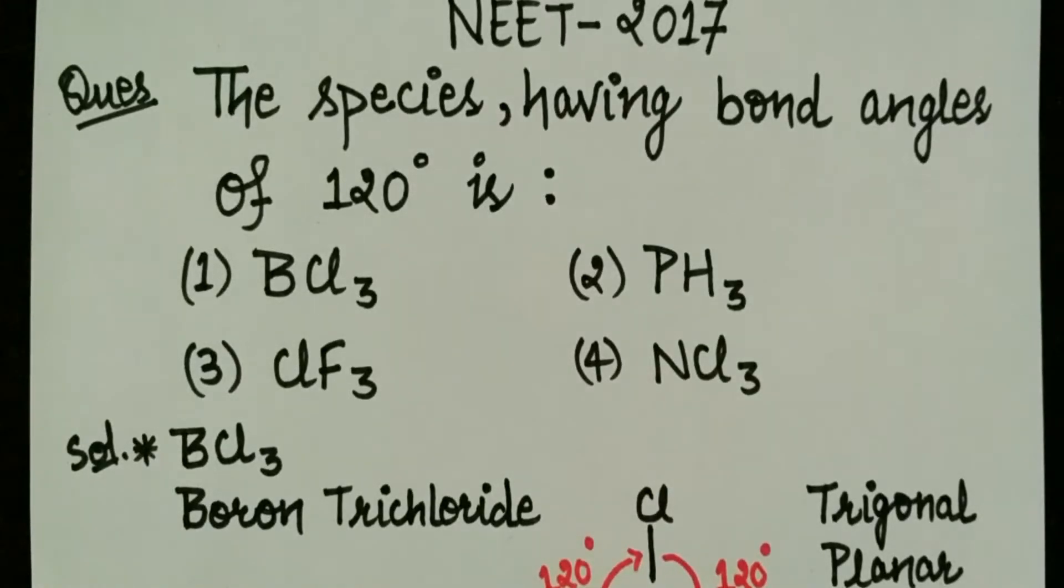Hello friends, we are going to discuss exam solutions for NEET 2017. This is a question from the chemistry part. The question is: the species having bond angles of 120 degrees is?